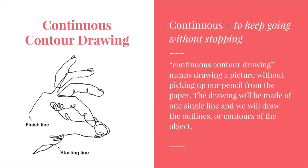The next type is a continuous contour drawing. The difference between a continuous contour drawing and a regular contour drawing is just that — it's continuous, it is a single line. Continuous means to keep going without stopping. A continuous contour drawing means drawing a picture without picking up your pencil from the paper. The drawing is made of one single line, drawing the outlines or contours of the object. Notice the hand on the left — there is a starting point and a finish point, just like on your Ozobot races. These are going to be challenging but also really fun.